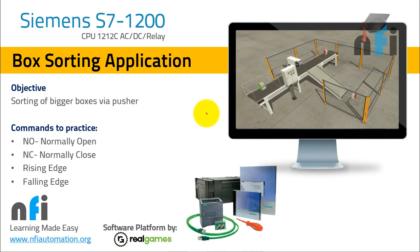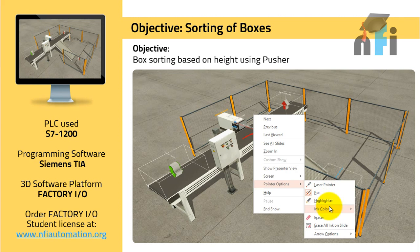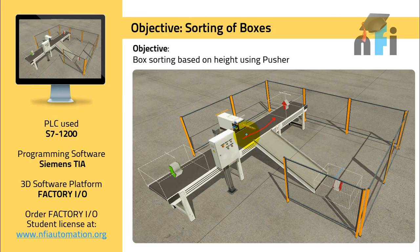So let's see what the application is and what the objective is. We'll start with sorting of boxes. The objective is box sorting based on height using a pusher. In this environment, we have a conveyor, a control box, and a pusher which will push boxes. We have two types of boxes — a bigger one and a small one. The small box will just go on the conveyor, but the bigger one will be pushed by the pusher onto the shoot conveyor.